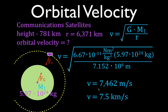So an object orbiting the Earth at 781 kilometers above the surface will have a velocity of just about 7.5 kilometers per second. Once again, that velocity is not dependent upon mass — if you place a different object there with a different mass, the velocity will be the same.